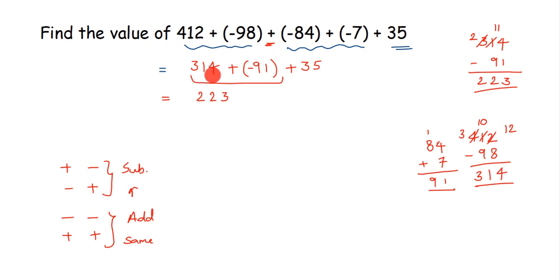The next number here we have is 35. We have to just add these two numbers now. We will add 35 and 223. 3 plus 5 is 8, 2 plus 3 is 5, and here we have 2. We get 258, and it will be positive.